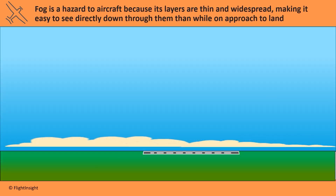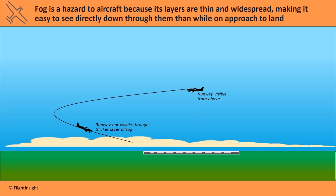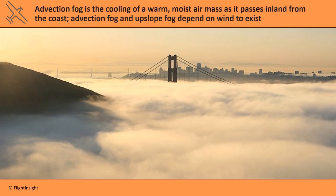Fog is another hazard to aviation because its layers are thin and widespread, making it easy to see directly down through them but not as easy to see when looking across it on final approach. Advection fog is most likely to occur from an air mass moving inland from the coast and cooling. This is the famous San Francisco fog that flows in from the Pacific. It depends on wind to form, just like upslope fog does, which is fog formed by the upwards flow of air over a mountain ridge.